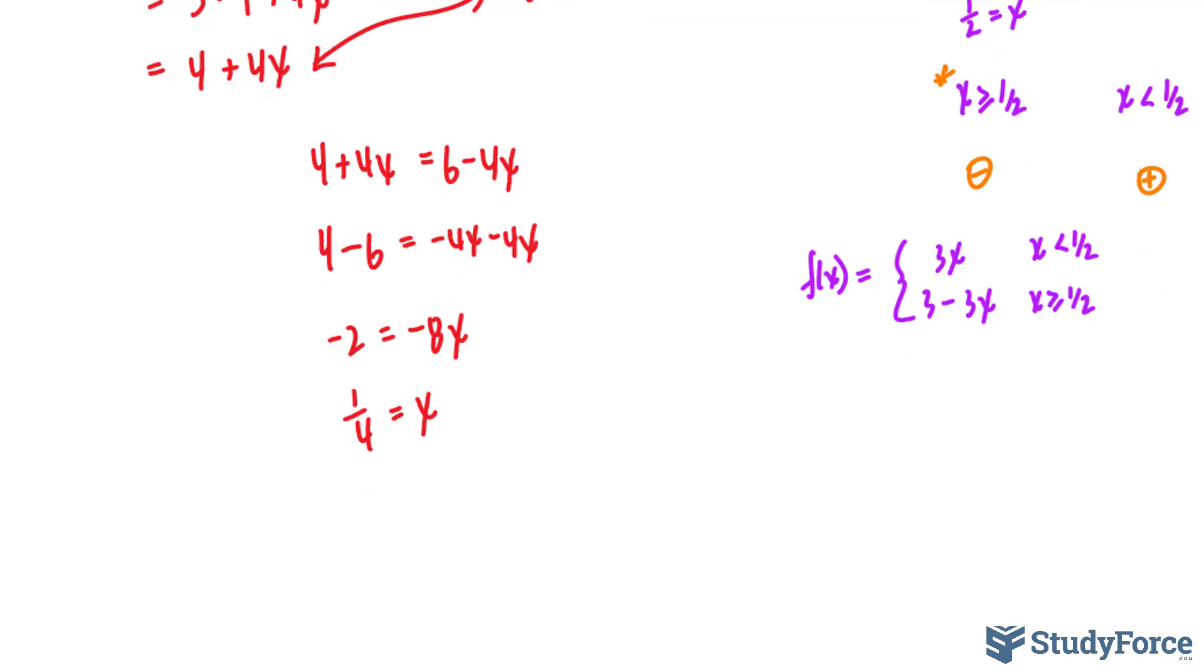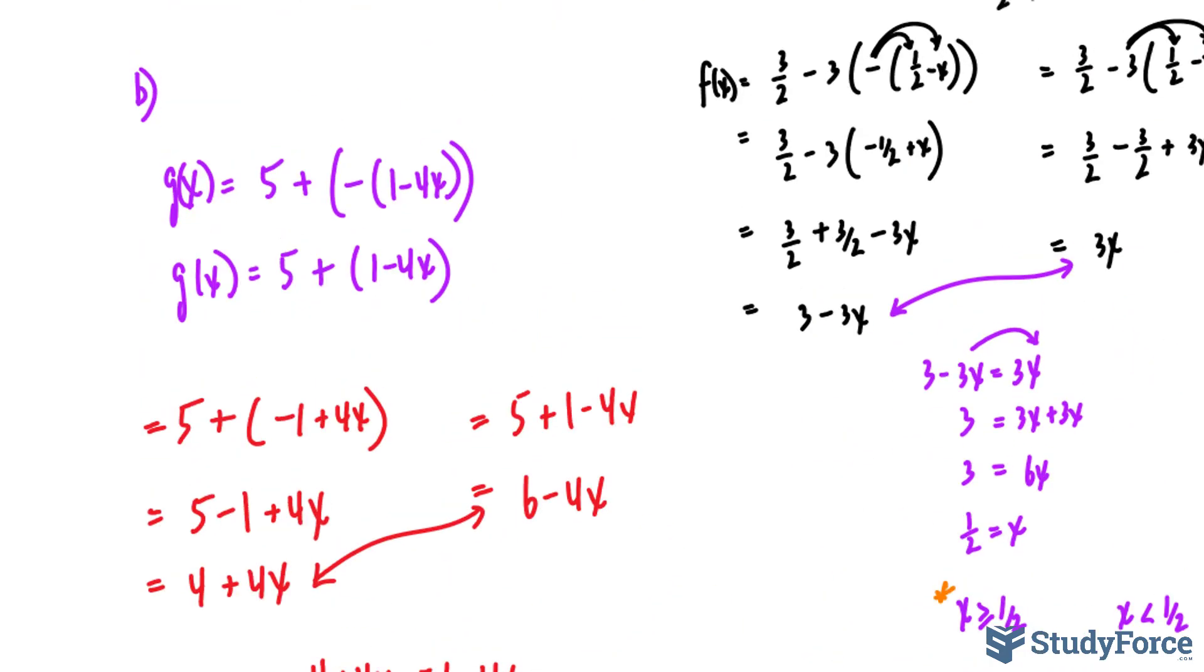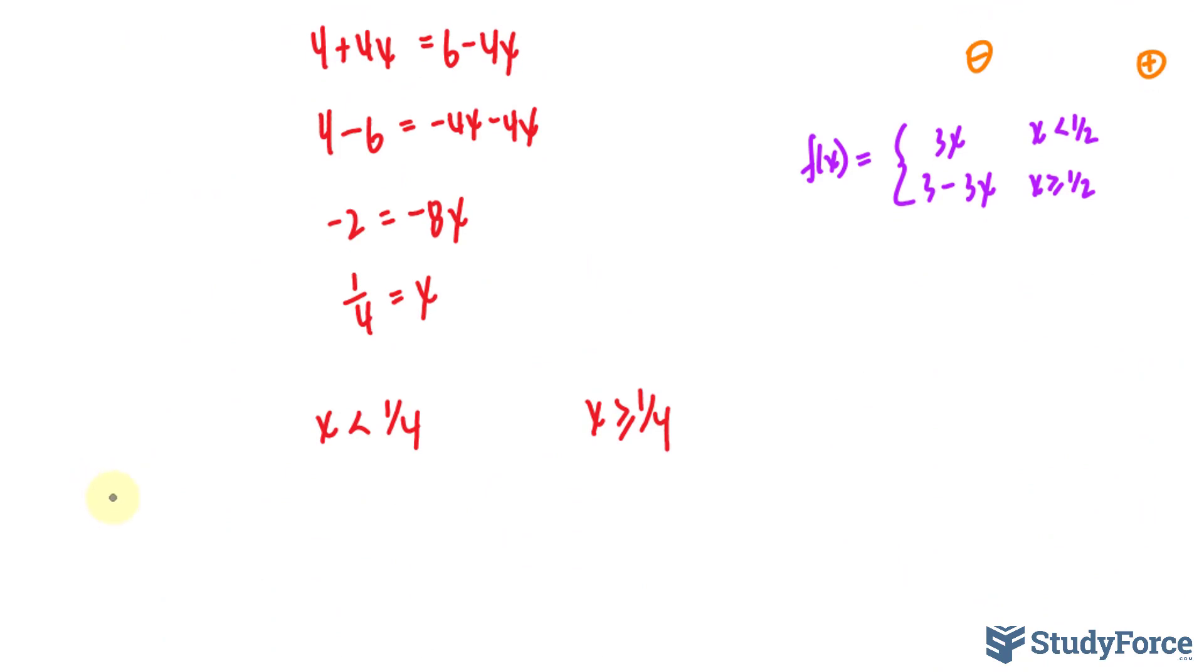Now we'll find out what happens when x is less than a quarter and when x is greater than a quarter. And we can put an equal sign right now under either one. Picking a value of x that's less than a quarter, if we recall, it was 1 minus 4x, that expression.